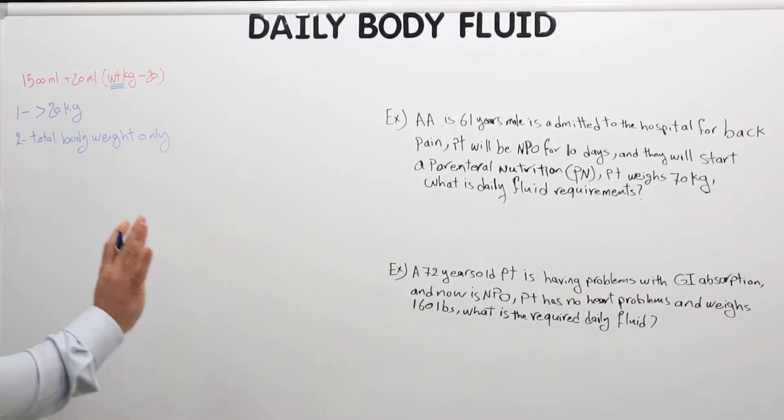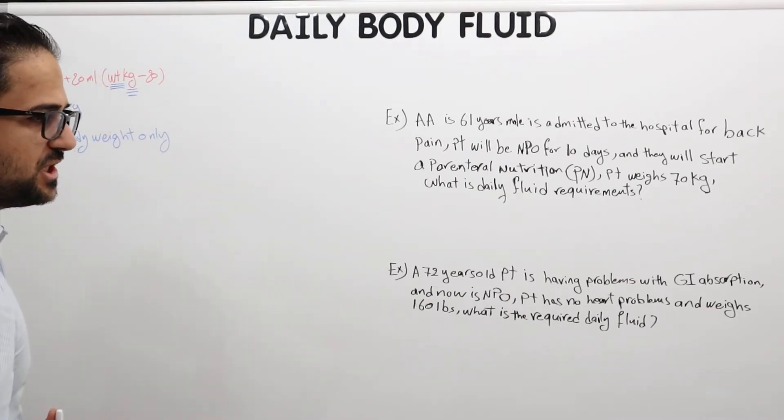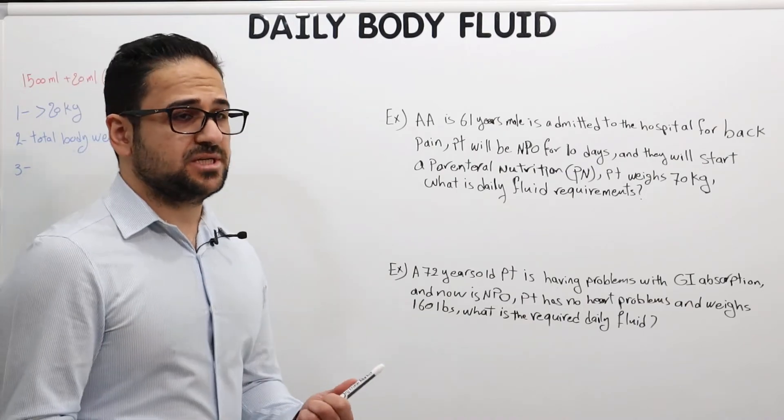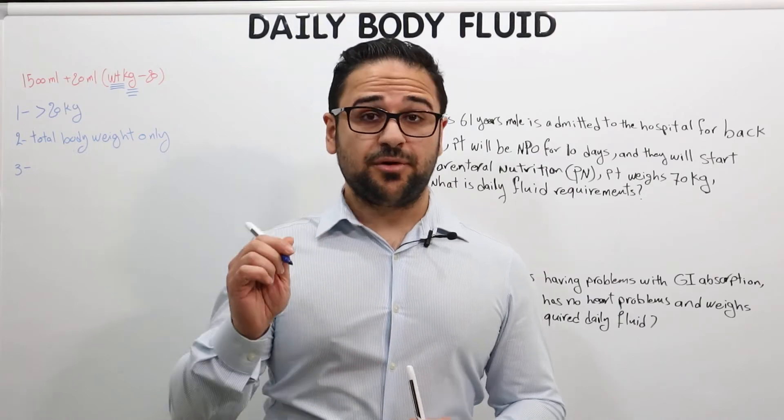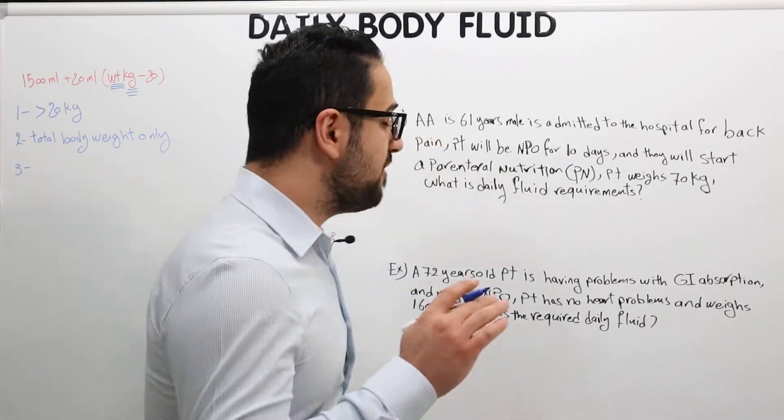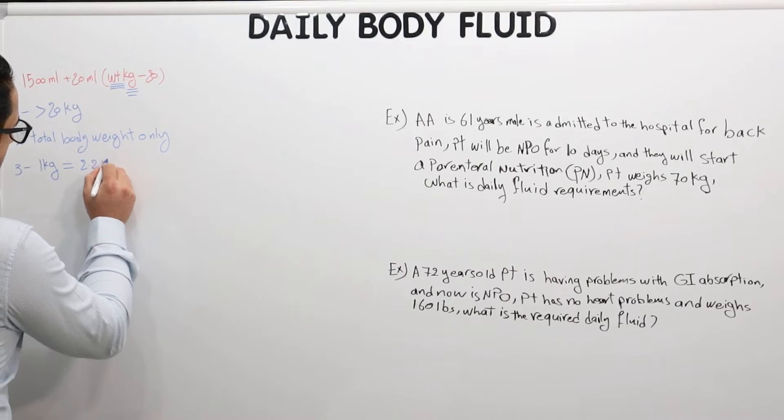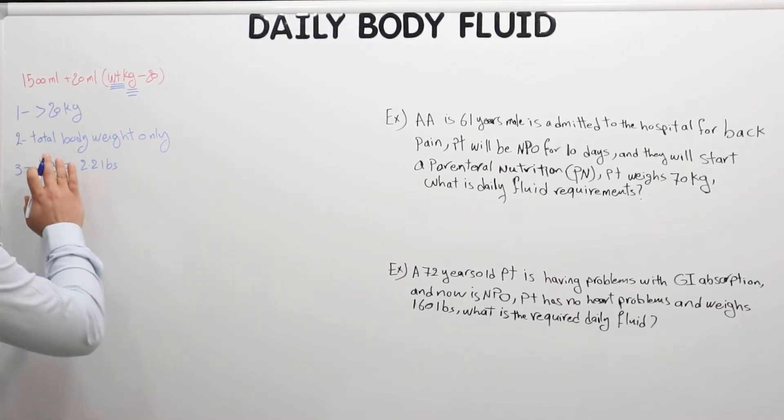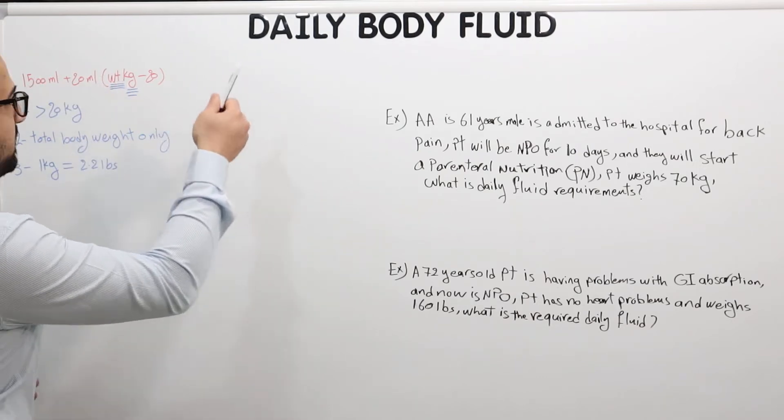The third thing that I want you to be aware of when using this formula: basically this is in kilograms. So always keep in mind when you have a question or any other setting where you have a patient in pounds, there needs to be a conversion to kilograms in order to apply this formula. And the conversion is basically for every one kilogram there are 2.2 pounds. So keep this in mind to have the right amount of fluid given to the patient.